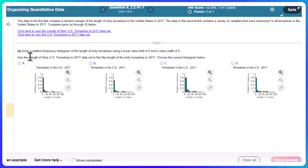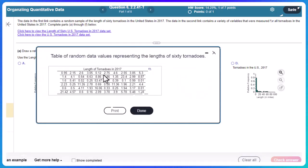So let's look and see what we're going to be doing here. Draw a relative frequency histogram of the length of the 60 tornadoes using a lower class limit of zero and a width of five. So I'm going to go ahead and click this first one. Here it is, I'm definitely going to want to open this in StatCrunch. So click that little button there and open.